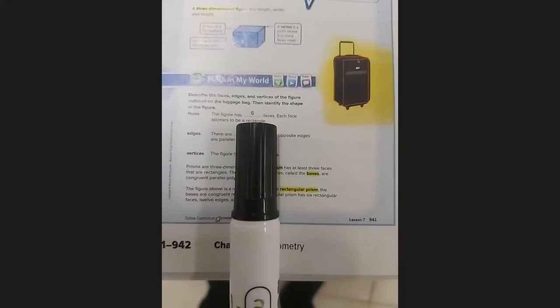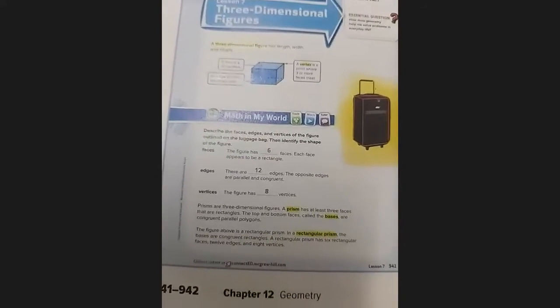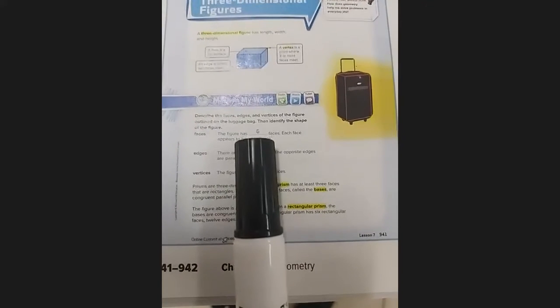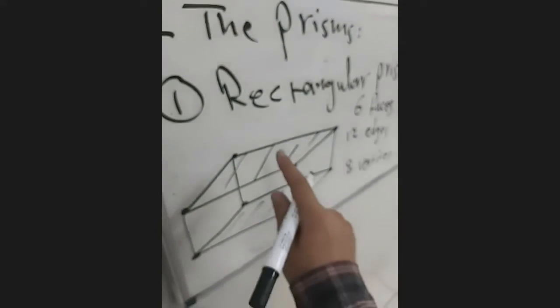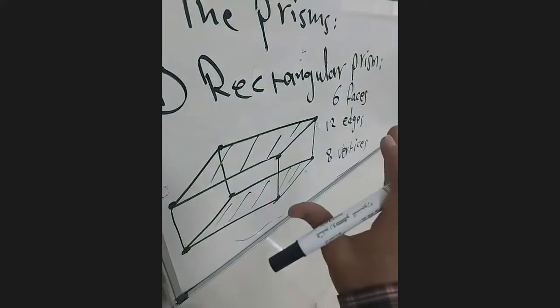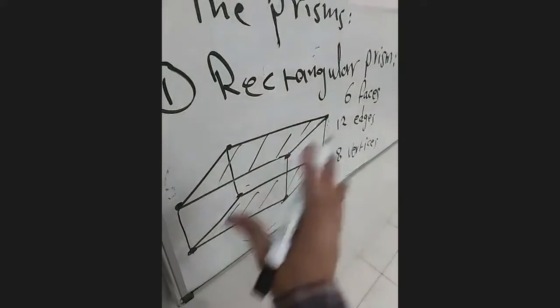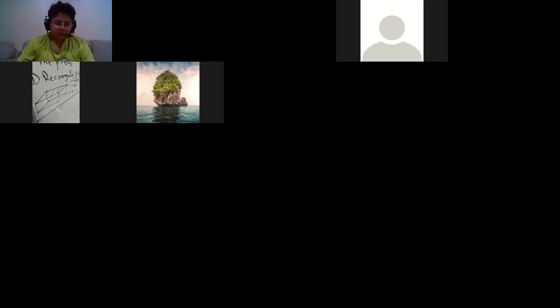Right, six. What are the six faces? The roof, the floor, and four rectangles around. So we have six faces, all rectangles. And 12 edges — let's count: one, two, three, four, five, six, seven, eight, nine, ten, eleven, twelve. Twelve edges.